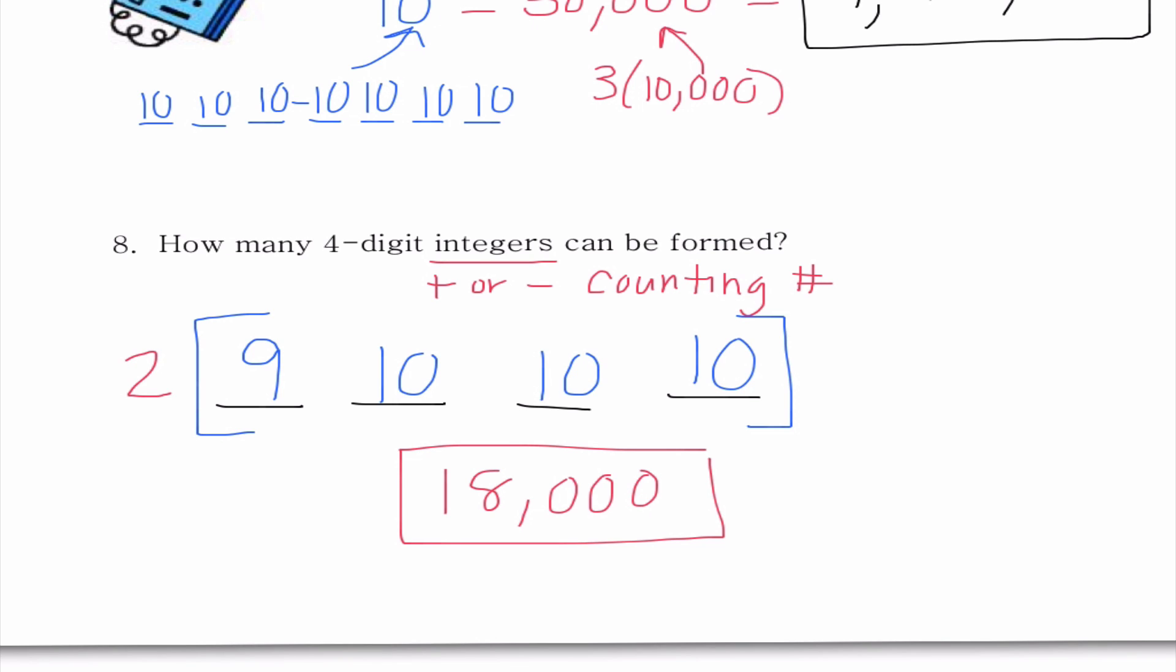So all your problems on your suggested problems tonight are going to deal with this concept of the fundamental counting principle. So remember, we are just multiplying the different number of options together to get the total number of events possible for the situation at hand. So that's it. I hope you guys have a fabulous evening and have fun doing your homework.